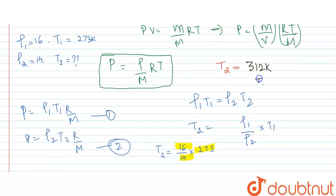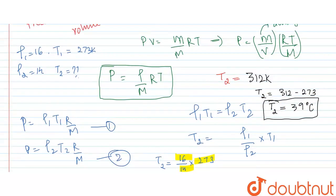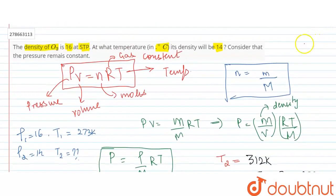When we solve this, the value of T₂ equals 312 minus 273, which equals 39 degrees Celsius. Although specific units weren't stated in the problem, in SI units density would be kilograms per cubic meter.